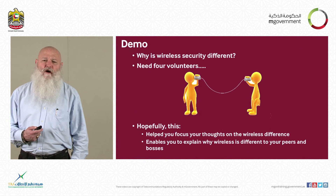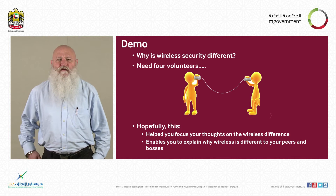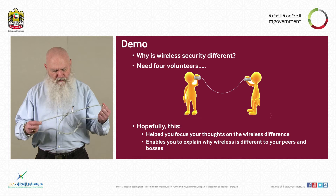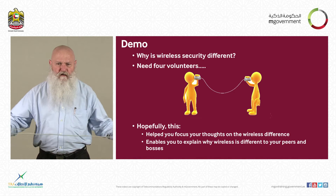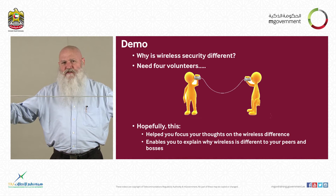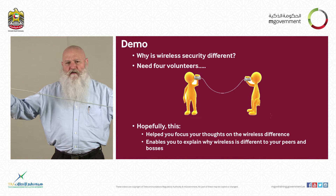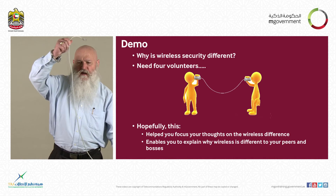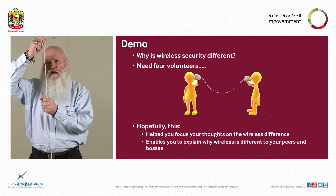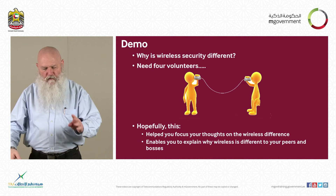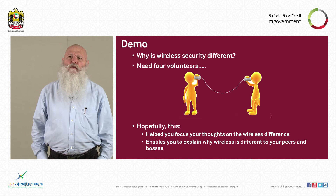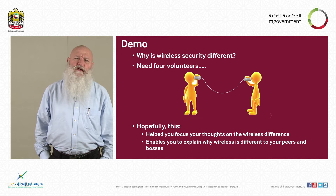Why is wireless security fundamentally different? If we look at a simple network — a wire that connects two computers — to intercept the communications or the data between these two computers, I need to physically access the wire. It's a simple idea, but with wireless, if you can hear my voice, you're within radio range, and you can intercept the signal.